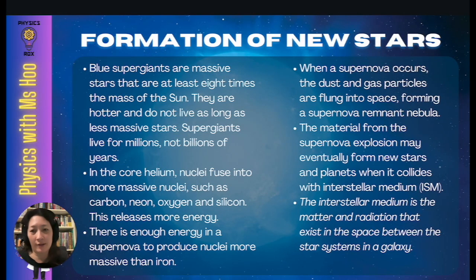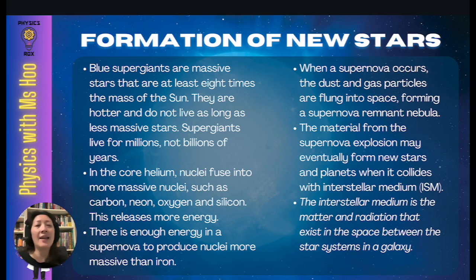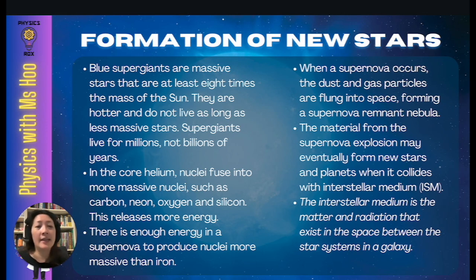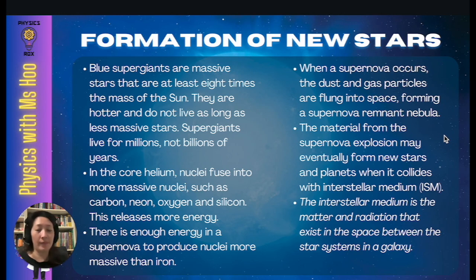Blue supergiants are massive stars at least eight times the mass of the Sun. Because they're so massive and hot, they don't live as long as less massive stars — supergiants live for millions, not billions of years, unlike our star which has another five billion years to go. In the core, helium nuclei fuse into more massive nuclei such as carbon, neon, oxygen, and silicon. A supernova has enough energy to produce nuclei more massive than iron. When a supernova occurs, dust and gas particles are flung into space, forming a supernova remnant nebula. This material may eventually form new stars and planets when it collides with the interstellar medium (ISM) — the matter and radiation existing between star systems in a galaxy.